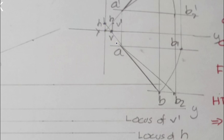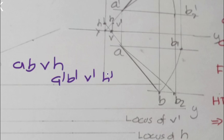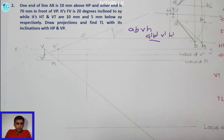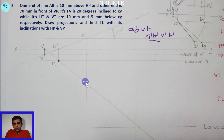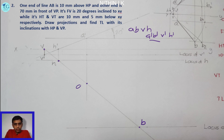Identifying the same VH line: extending AB in the top view gives point H, and A-dash B-dash extended gives V. From the VH line, we observe points V, H, and H-dash. Extend the VH line and the A-dash B-dash line; extend line B and line A-dash as needed.